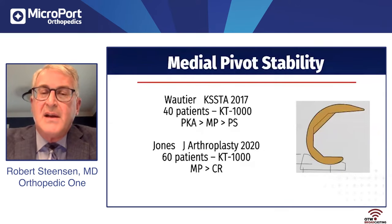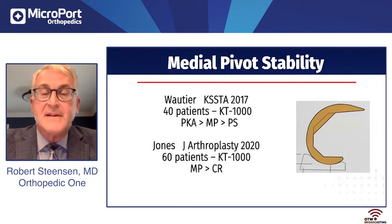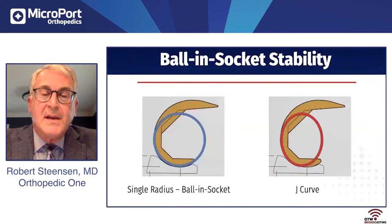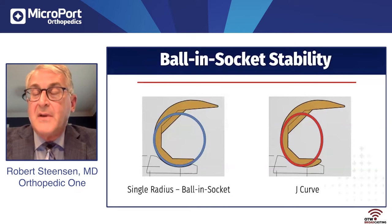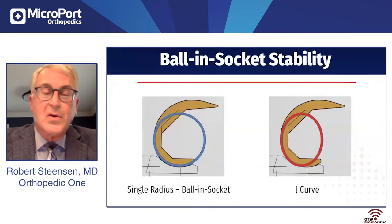I wanted to touch on my viewpoints on the medial pivot knee. It is the most stable knee — more stable than a cruciate retaining, more stable than a posterior stabilized. These are two studies where the authors used the KT-1000, a device that straps on the front of the knee to test how loose the ACL is. In these two series, they found that among primary total knees, the medial pivot was the most stable.